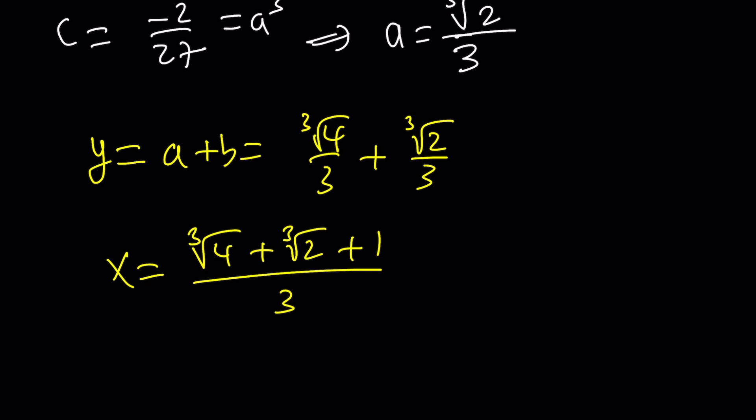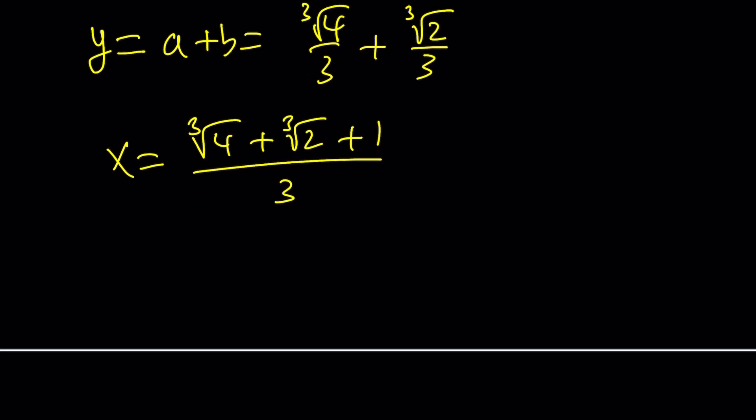What about the other solutions? Well, if you divide this polynomial by x minus x sub 1, which is going to be a very involved process, you'll get the other factor — the quadratic. You can also use Vieta's formulas and many other ways to do it. But since this channel mainly focuses on real numbers, I'm going to stick to the real solution. If you're really curious about complex numbers, go check out my other channel.